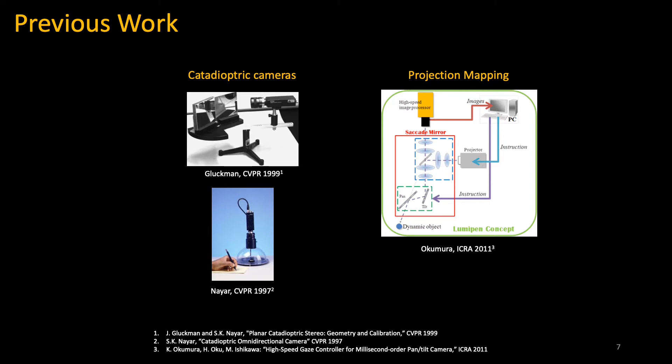Our work is similar to catadioptric cameras, which focus on inserting mirrors into a camera's field of view. In the top left image, the authors insert two planar mirrors to simulate a stereo vision system. You only have as many viewpoints as mirrors in this case, so increasing viewpoints becomes expensive. In the bottom left image, the authors insert a curved mirror to greatly increase the camera's field of view to 360 degrees. However, you sacrifice angular resolution.